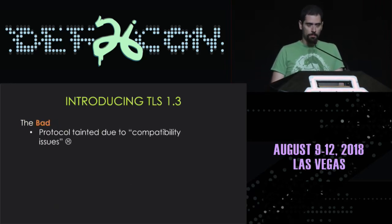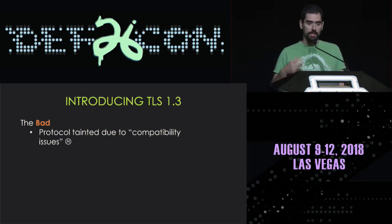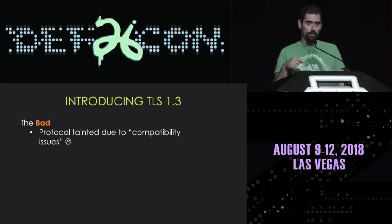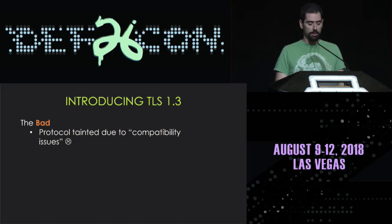Let's talk about compatibility issues. Last year, Chrome and Firefox were doing field tests and found that around 5% of users were not able to connect to websites using TLS 1.3. Analysis revealed this was caused by middleboxes — corporate networking devices inspecting or intercepting HTTPS. They made modifications to the protocol: specifically, they changed the TLS 1.3 handshake to look like a TLS 1.2 session resumption, which fixed the middlebox issues. The protocol may not be as pure as it could be, but given the circumstances, it was the right thing to do.